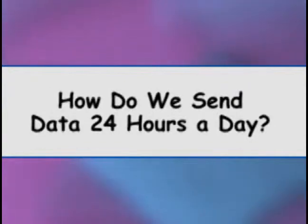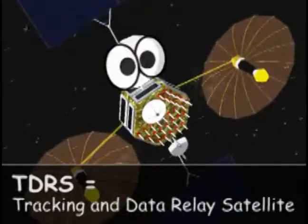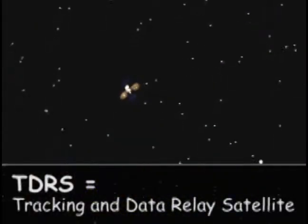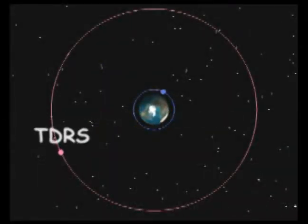To solve this problem, NASA created some special satellites called TDRSs. TDRS stands for Tracking and Data Relay Satellite. TDRSs stay high up in the sky, and they stay connected with other TDRS satellites and the ground station all the time.